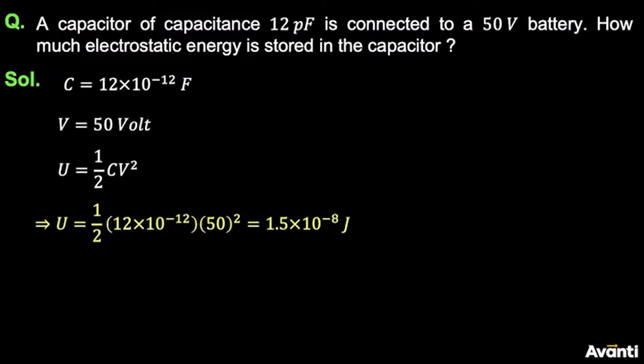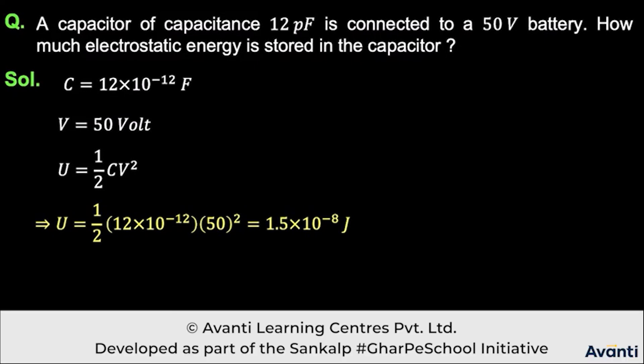And that is the potential energy and electrostatic energy: 1.5 × 10^-8 joules.